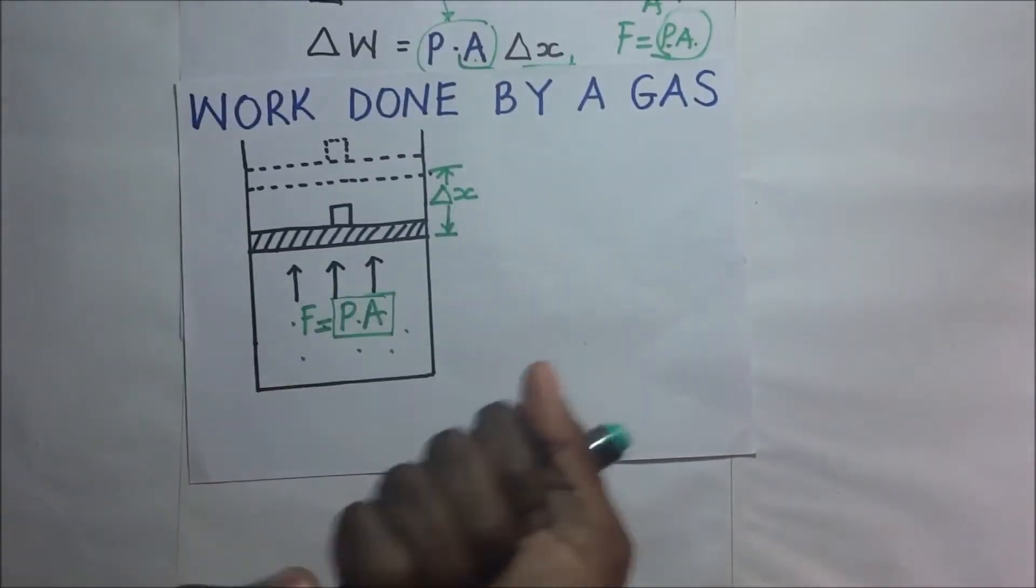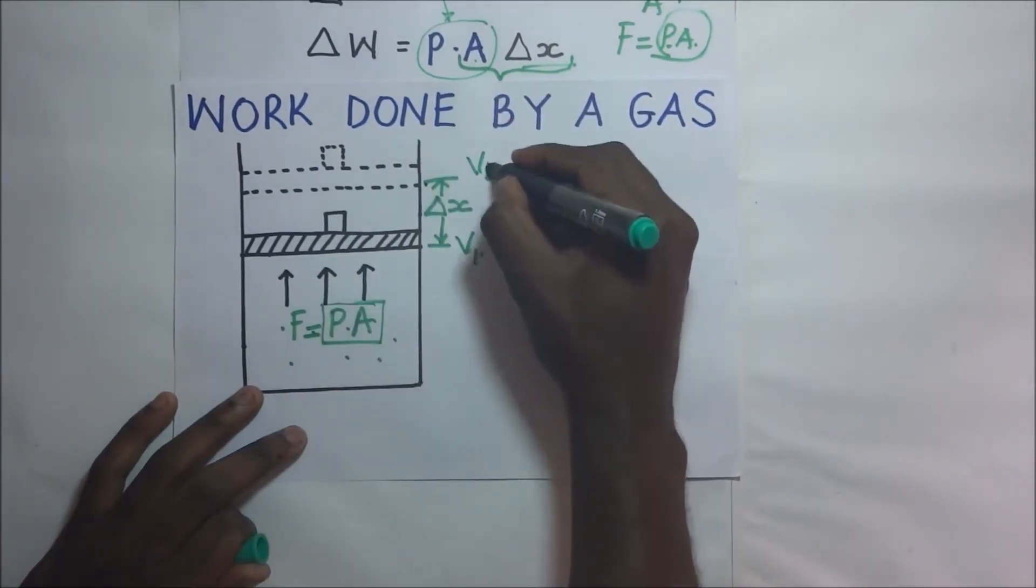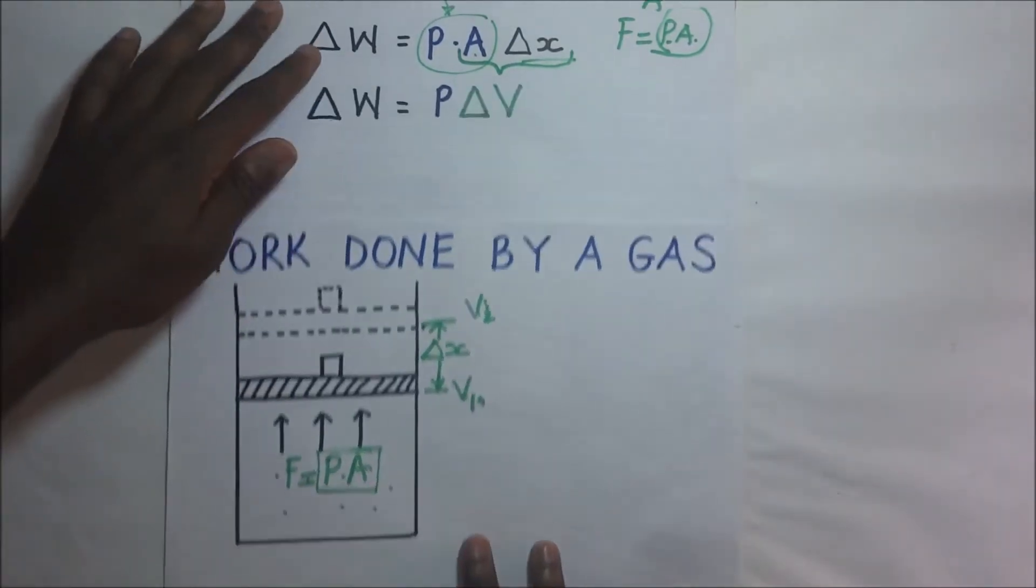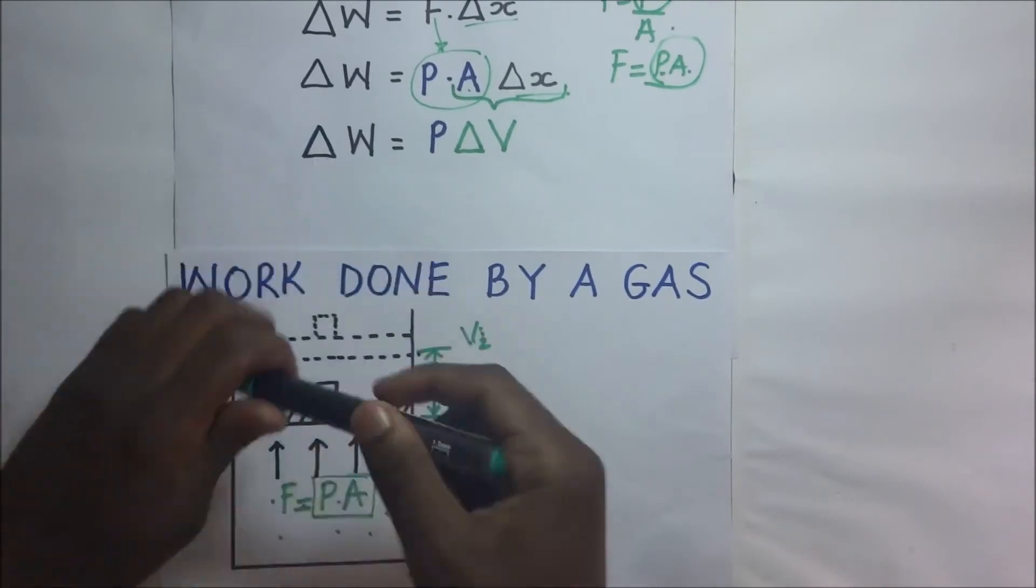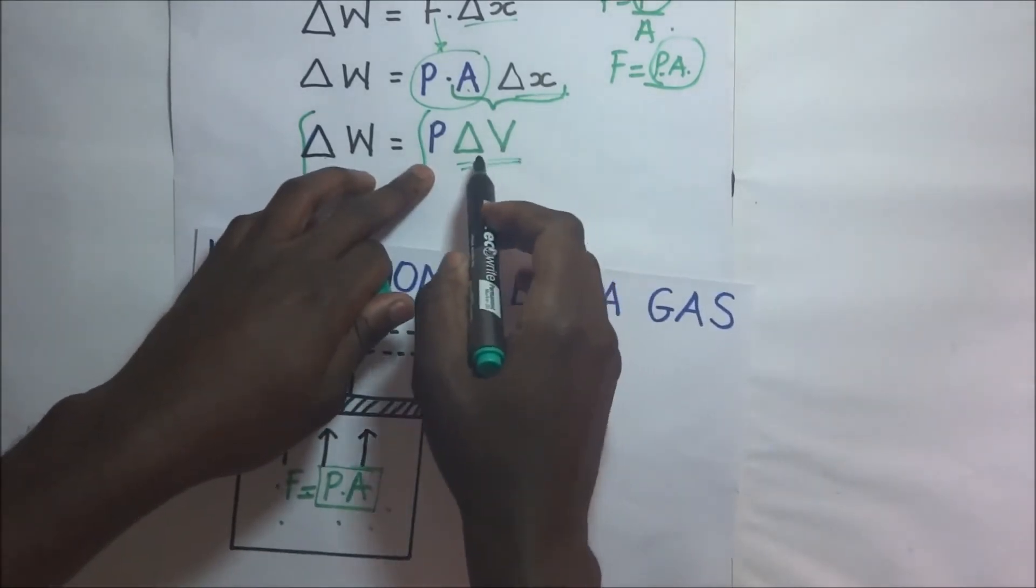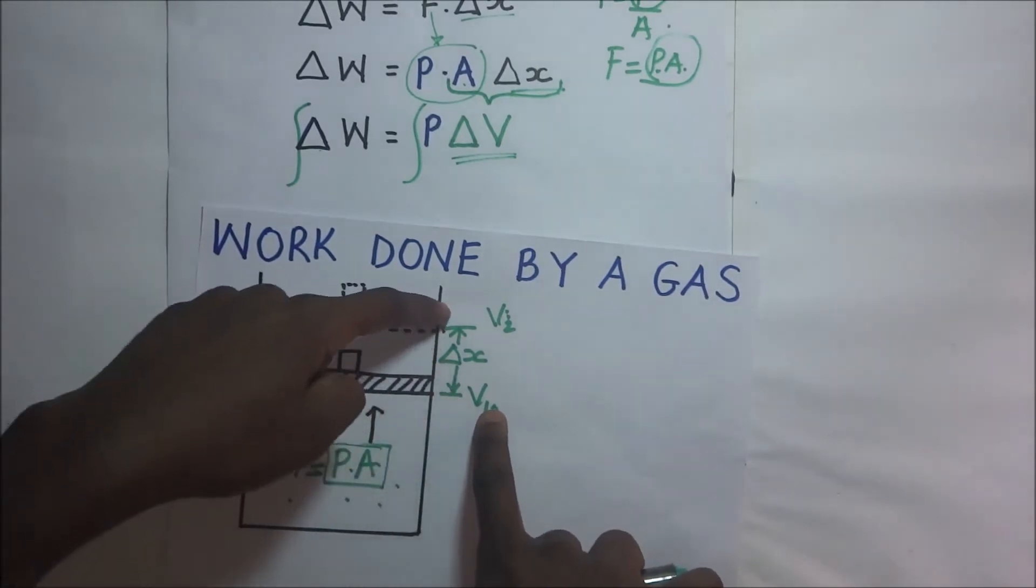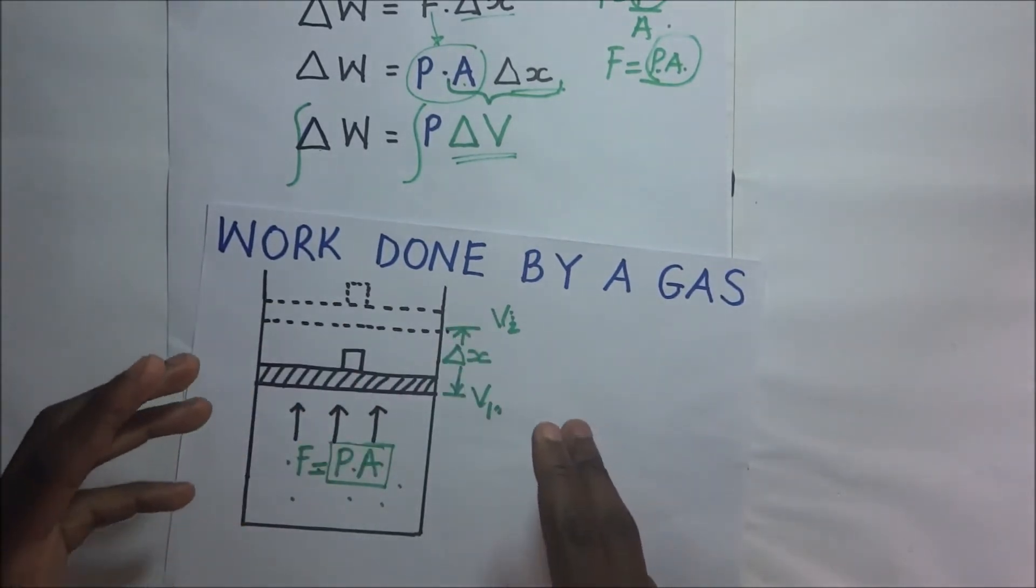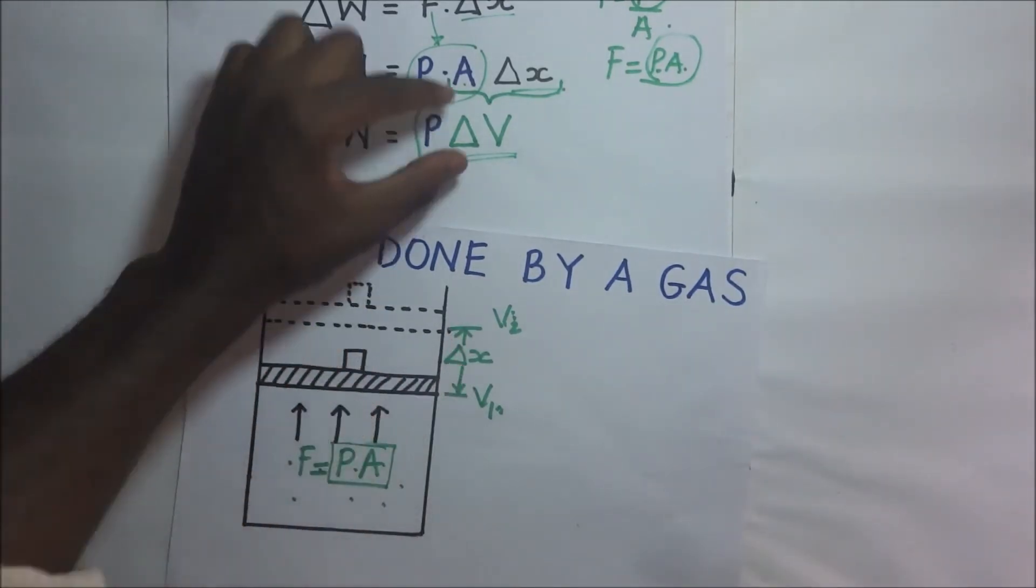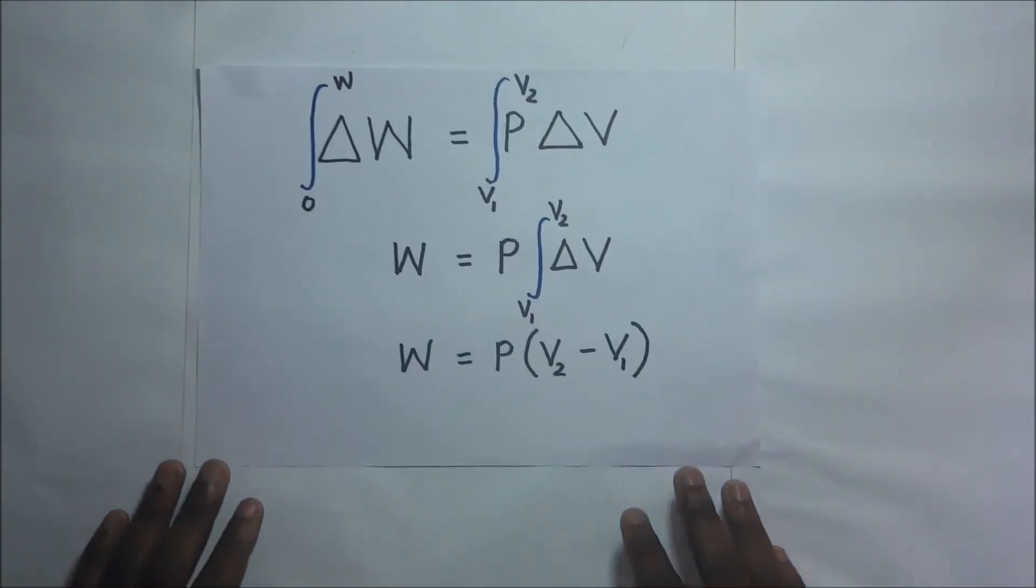And these two volumes are finite, they are big. Then it would mean that this expression we will have to integrate it on both sides. For us to be able to get the real work done by that change in volume from V1 to V2, when the volume changes by a finite amount and not just by a small amount like we have been illustrating here, we are going to integrate.